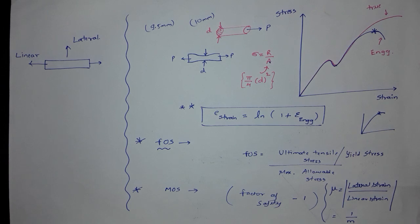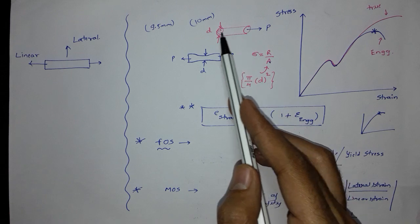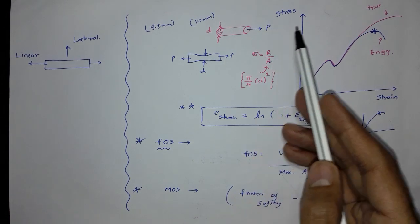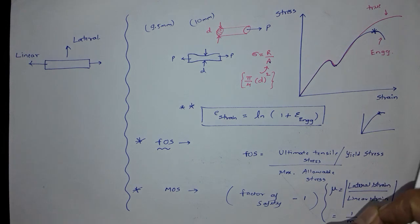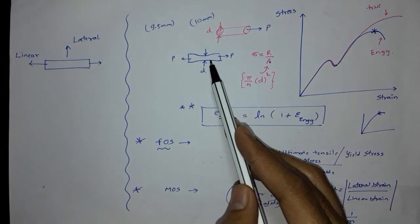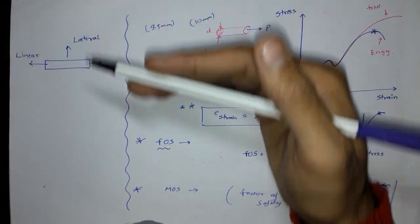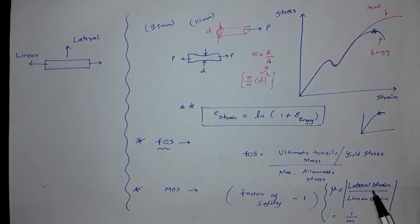The next important concept is Poisson's Ratio. Poisson's Ratio helps us understand lateral strain and linear strain — these are different things. Linear strain is the strain induced in the direction in which the force is applied. When you apply a pull force to a rod, the strain produced in that direction is called linear strain. When I pull force in this direction, it will also decrease the diameter, and the resulting strain in that perpendicular direction is called lateral strain.